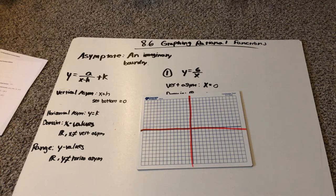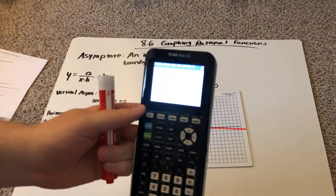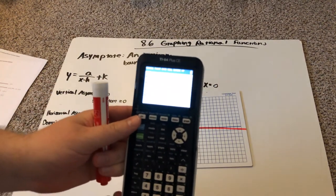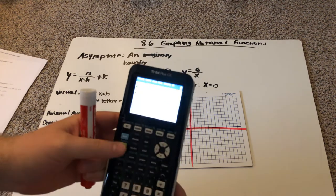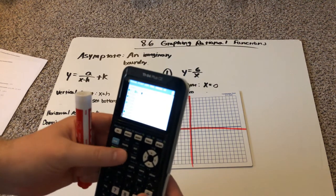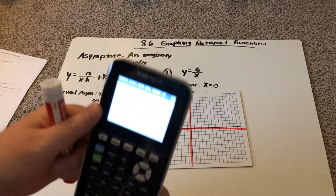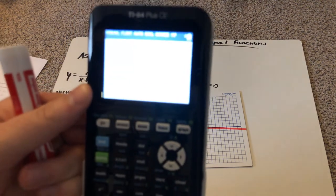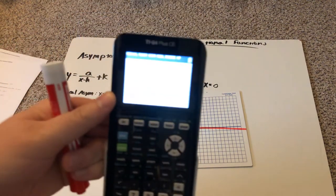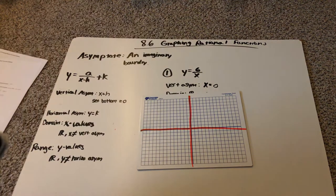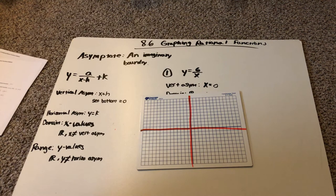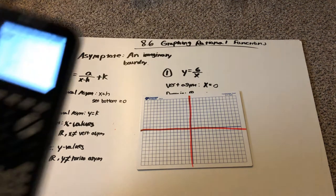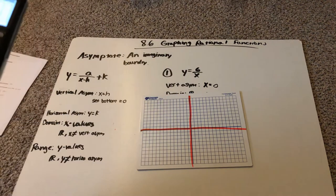And in order to graph, I need points. So, handy-dandy calculator, y equals six divided by x. Hit graph. And we get these weird lines. It's not showing up on the camera right now. But go second, graph, and you get a table full of points. Plot some points.